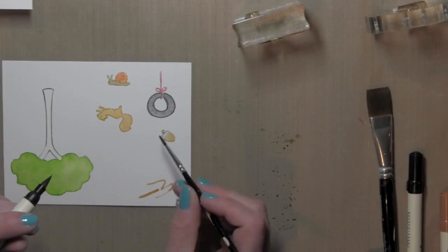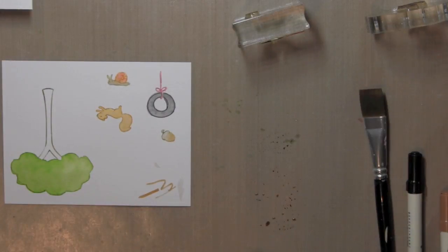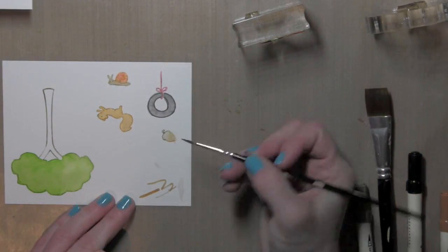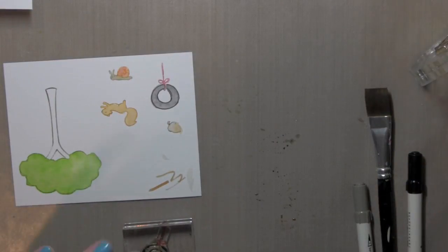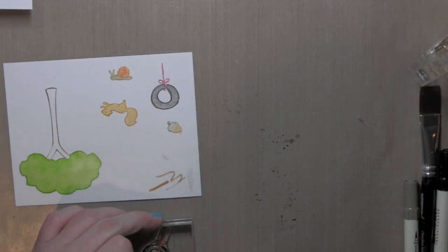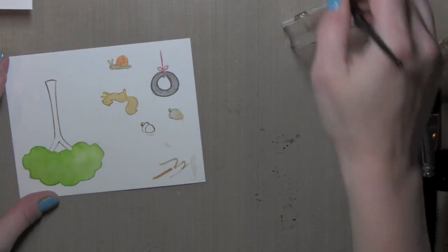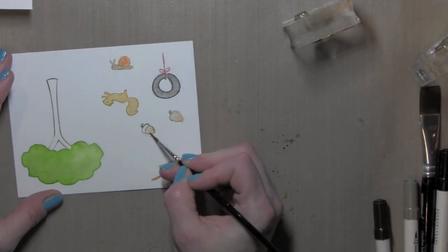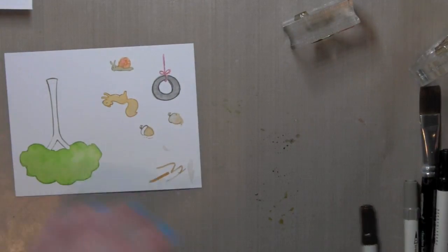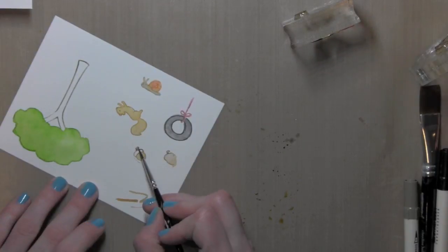So even though I may have gone back and added additional color like I did with the snail, it worked really well to just let the snail dry while I worked on the squirrel, and then go back and darken it up after it had initially dried.